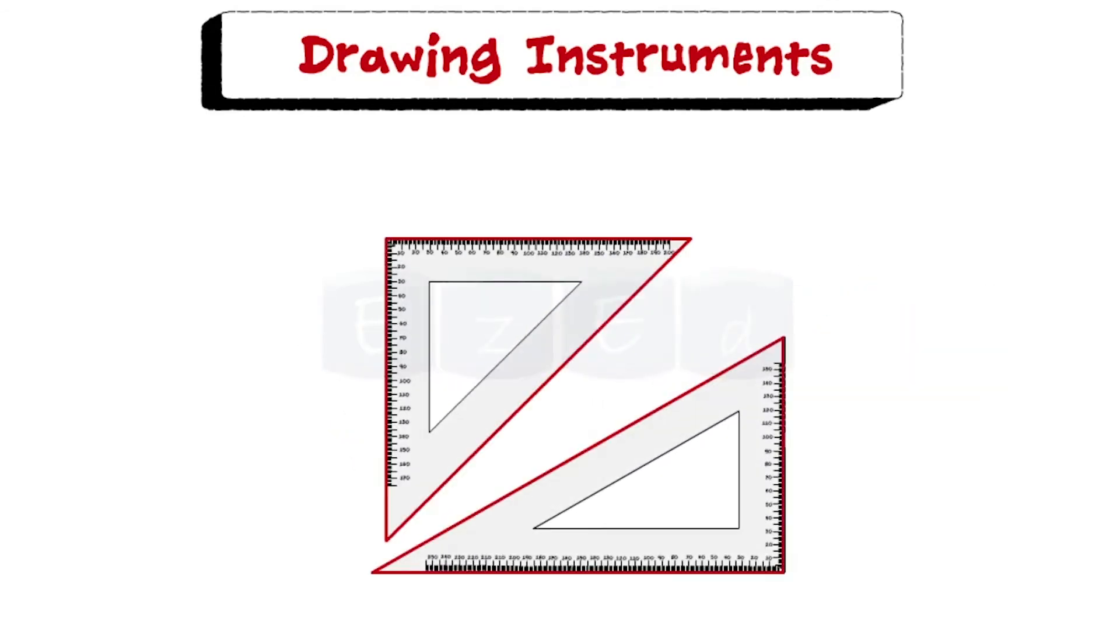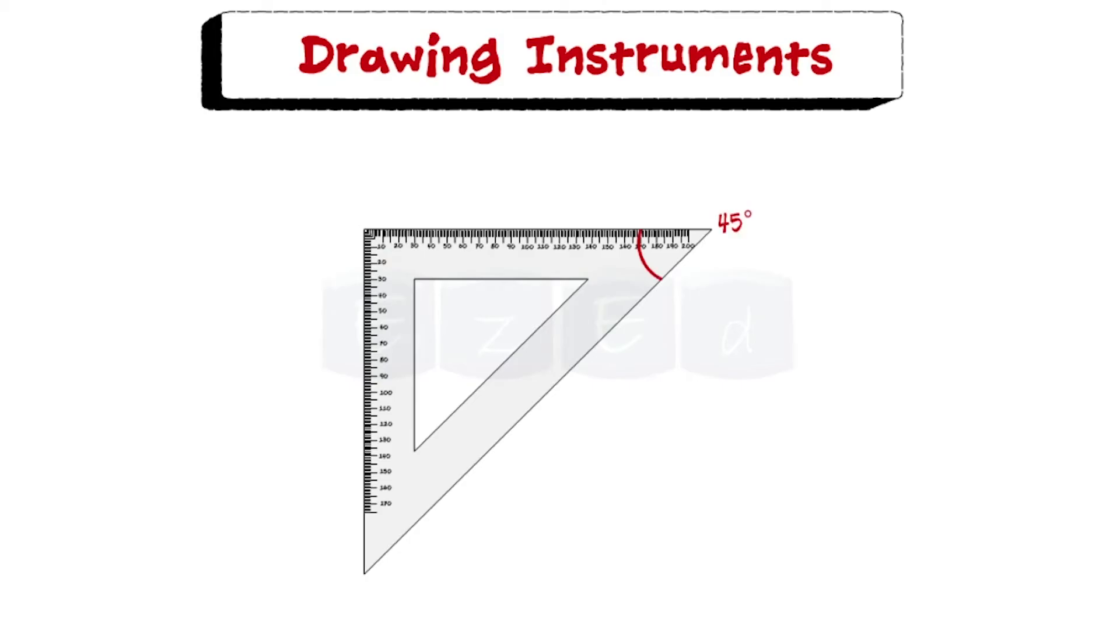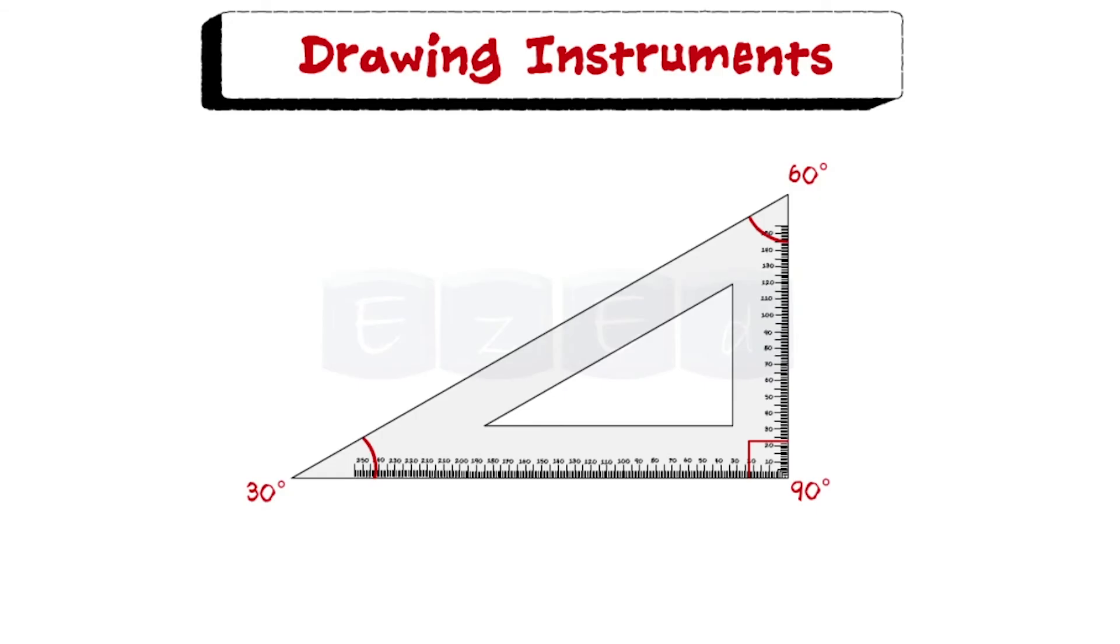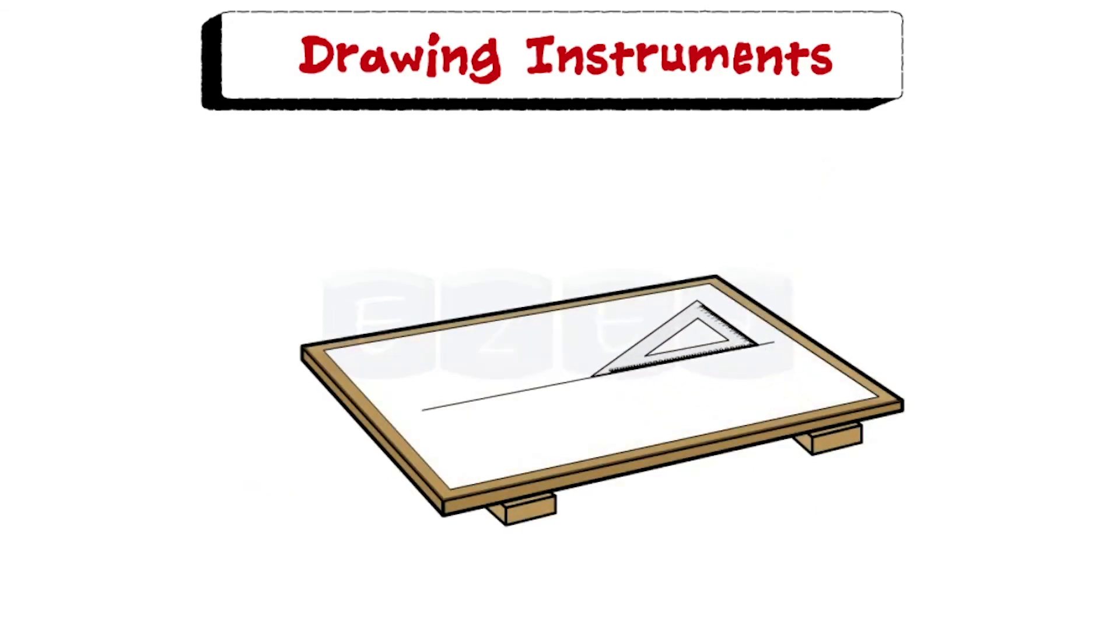Set-square is triangular in shape with one of the angles as right angle. Two forms of the set-square are generally used. One having angles 45, 45 and 90 degree and the other is 30, 60, 90. Set-square in combination with t-square is used to draw lines at an angle.